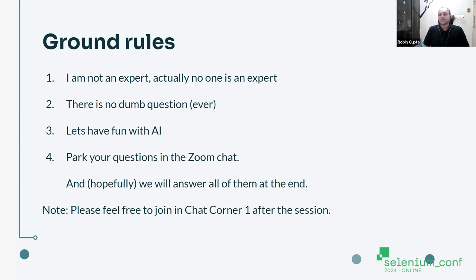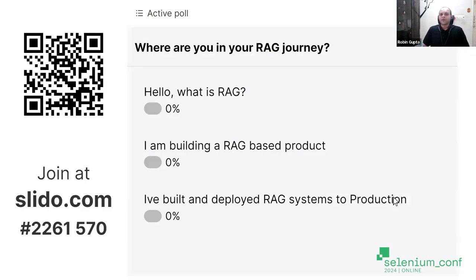After the session, you can go to the Conf Engine web app and join us in the chat corner, and we can go on track, off track, and discuss other things in life. First, a quick poll — if you can quickly join Slido at code 2261570 or scan the QR code, I'd really like to understand where you are in your RAG journey so that we can make this session contextual to you.